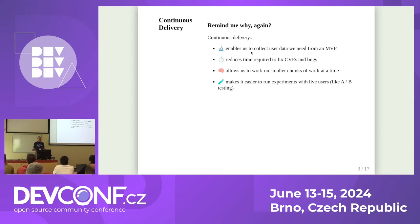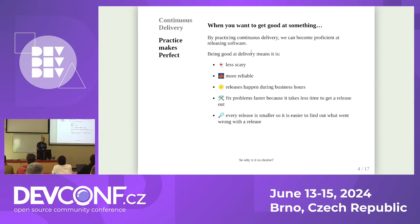Continuous delivery allows us to work with smaller chunks of work at a time. Smaller releases are much easier to deal with than really big, quarterly, monolithic releases. It makes it easier to run live experiments and A/B testing. And if you want to release frequently, you need to be able to do so. Every release becomes smaller if you do it more frequently — and it becomes more reliable, faster.